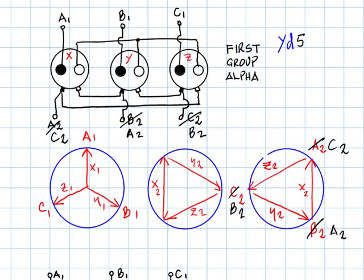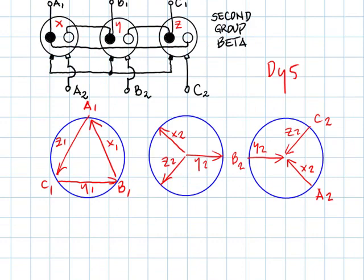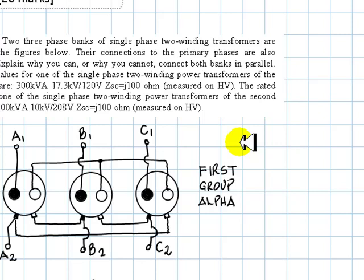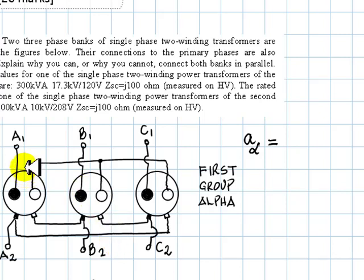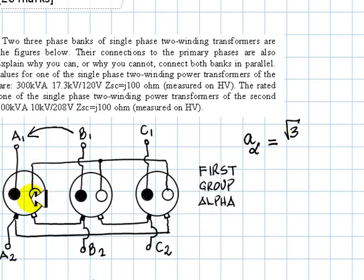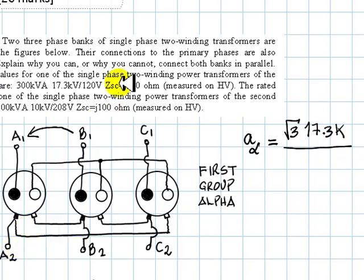Group Alpha is YD5 and Group Beta is DY5, so they seem compatible on clock group. Now we compute the single-phase transformation ratio for Alpha. The line-to-line voltage of the primary is root 3 times 17.3 kV (the coil voltage), and the line-to-line voltage of the secondary (delta-connected) is just 120 volts. That ratio is approximately 250.